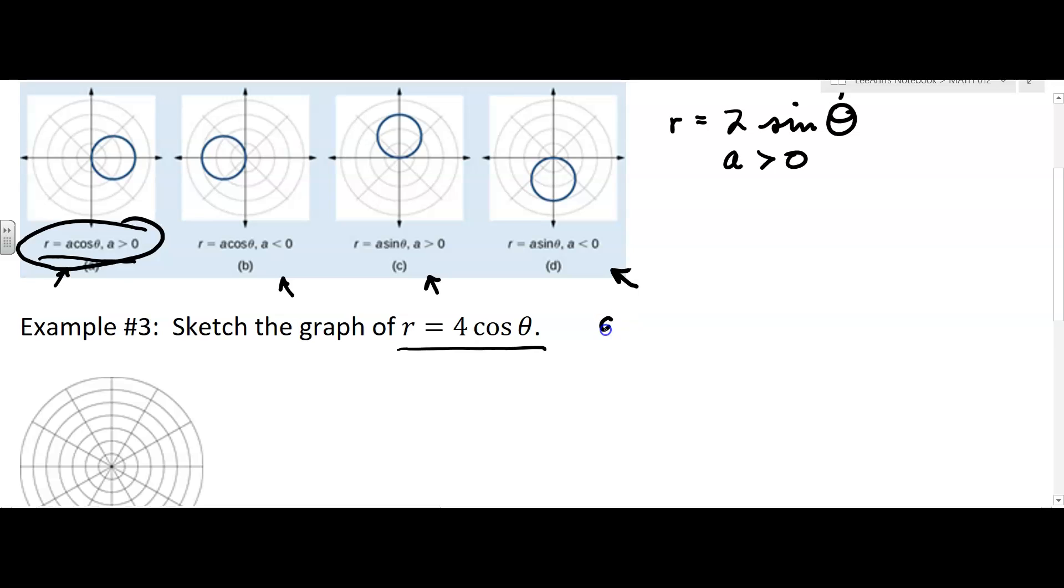So this is, in this case, a is 4, so that means a is greater than 0, and it's a cosine. So it's going to look something like this graph. Now, I can think about the maximum value.